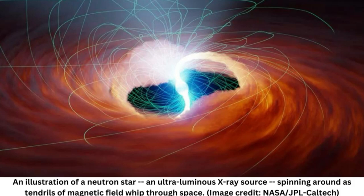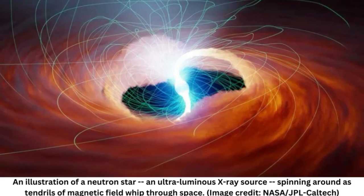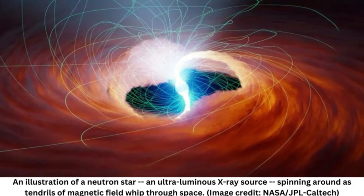Astronomers used to believe ULXs could be black holes, but M82X2 is an object known as a neutron star. Neutron stars are the leftover, dead cores of stars like the sun. A neutron star is so dense that the gravity on its surface is about 100 trillion times stronger than that of Earth.